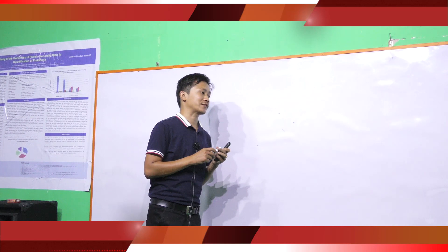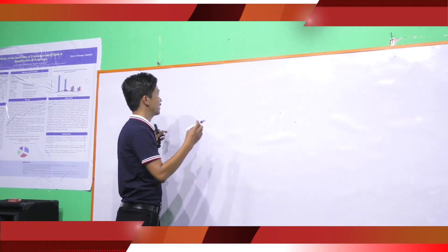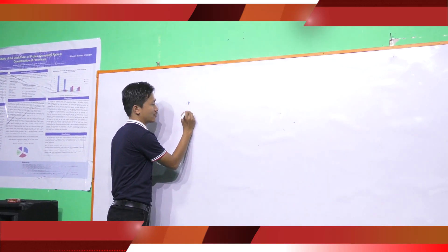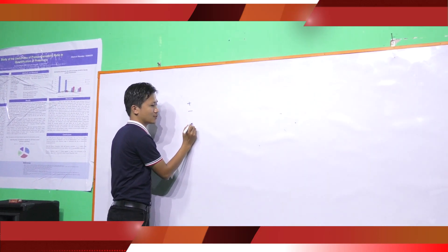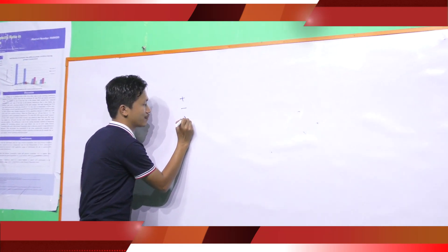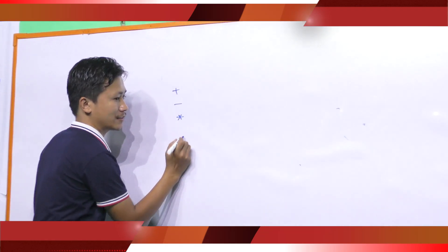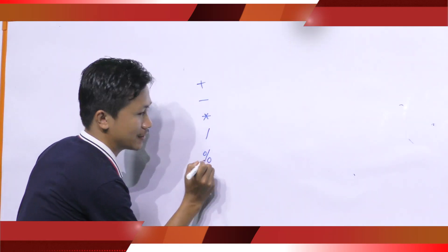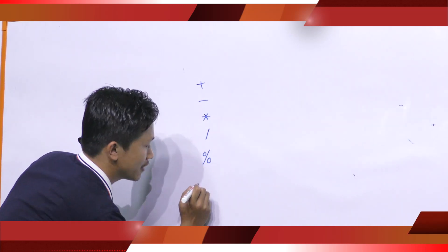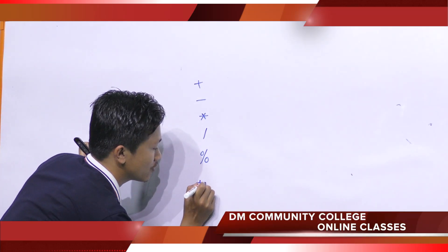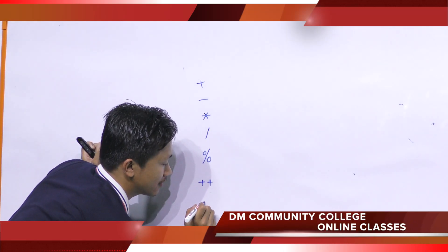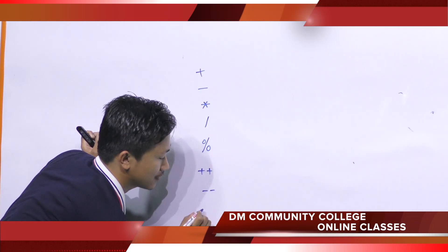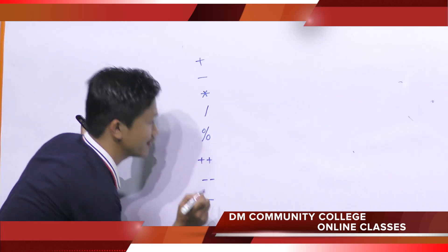First one is arithmetic operator. We have eight arithmetic operators: addition operator, subtraction operator, multiplication operator, division operator, modulo operator, increment operator, decrement operator, and unary minus.